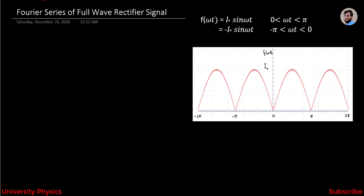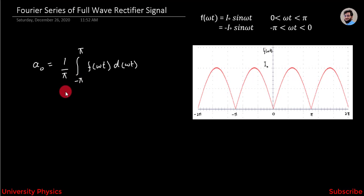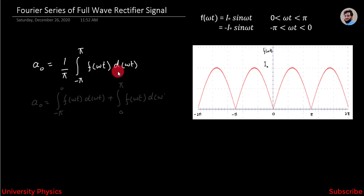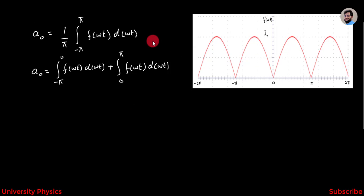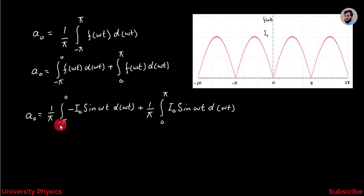First we have to find a₀, which is equal to (1/π) times the integration from -π to +π of f(ωt) d(ωt). This can be written as a₀ = (1/π) times the integration from -π to 0 of -I₀ sin(ωt) d(ωt) plus (1/π) times the integration from 0 to π of I₀ sin(ωt) d(ωt).